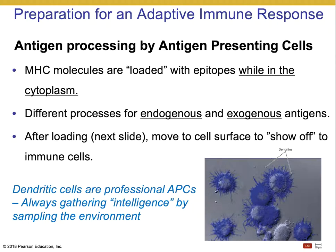The MHC molecules acquire the epitopes while still within the cytoplasm of the cell that produces them. There will be different processes depending on whether those antigens are endogenous or exogenous. After the epitopes are attached or loaded onto the MHC molecules, those molecules then move to the cell surface and attach in the membrane via either that single or dual transmembrane portion seen previously.